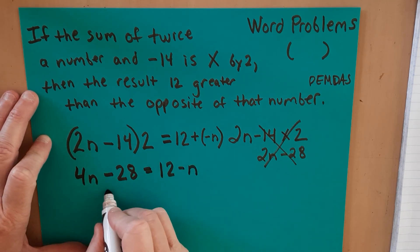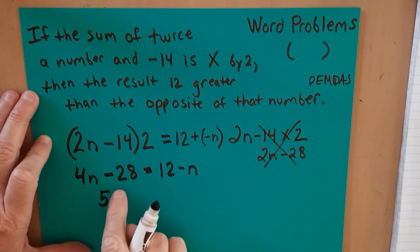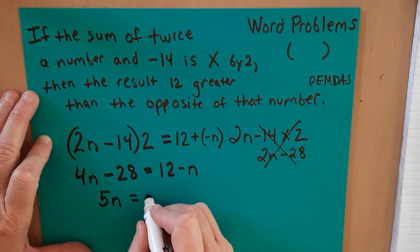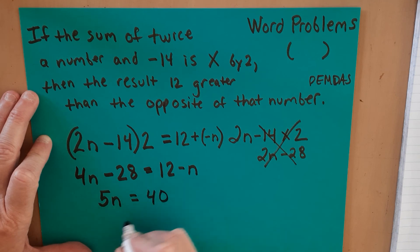And that equals 12 minus n. We add n to each side. We get 5n. We're going to add 28 to each side. 5n equals 40, which means that n equals 8.